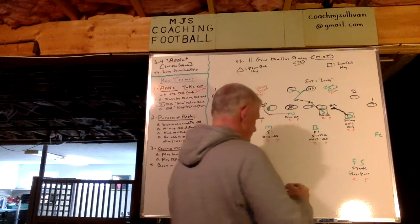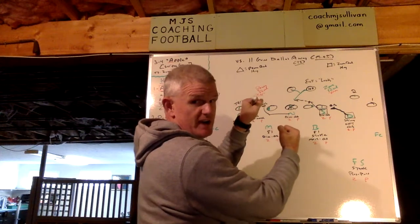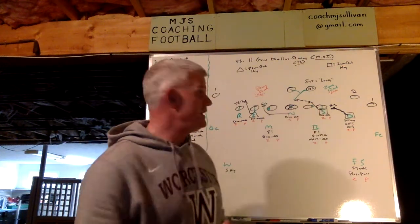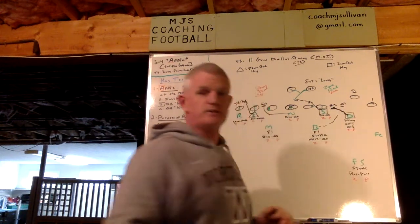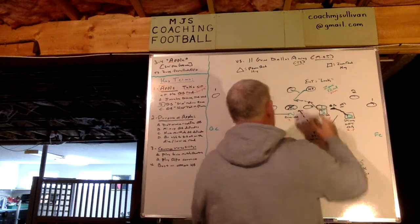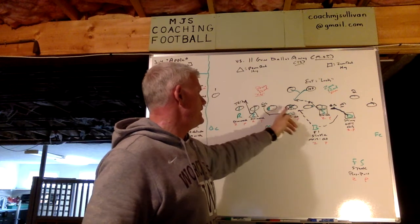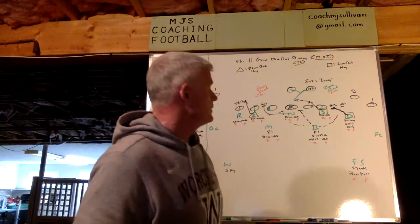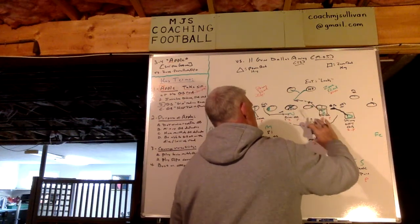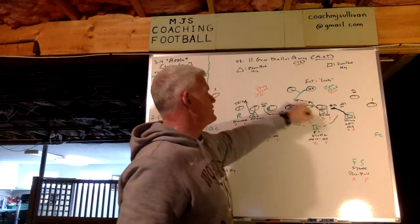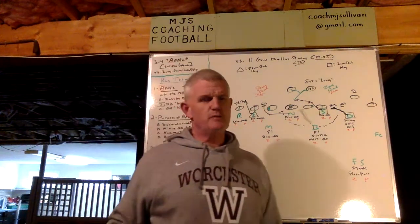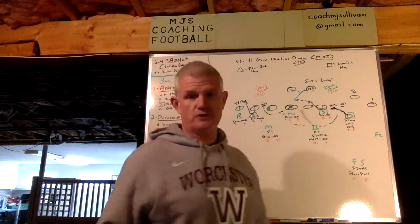The inside linebacker on that side is in a rod-mat assignment — static, staggered stance, outside back foot hot, reading the mesh. If the quarterback keeps it, he's going to be another quarterback defender outside. But if the quarterback does what we think he'll do and gives it, he fits the A gap — possibly opposite A on a hard zone, same side A if it's not as hard a zone. We'll assume a full hard zone. The slanting B-gap defensive end is a bender on the dive, so he'll take care of that A.